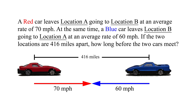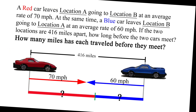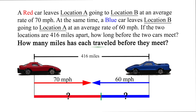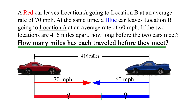A red car leaves location A going to location B at an average rate of 70 miles per hour. At the same time, a blue car leaves location B going to location A at an average rate of 60 miles per hour. If the two locations are 416 miles apart, how long before the two cars meet? In addition, how many miles has each traveled before they meet?